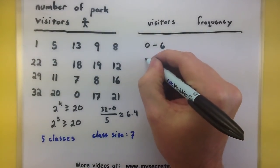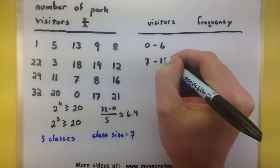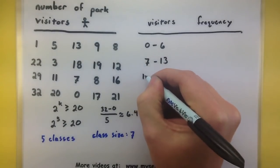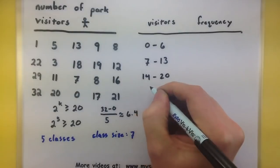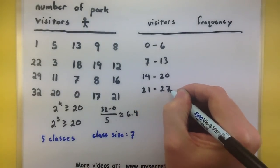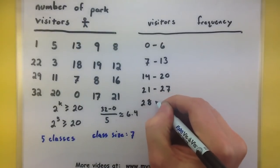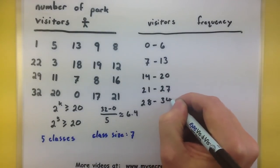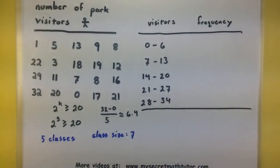Next one contains 7 through 13, 14 through 20, 21 through 27, and the last one 28 through 34. So sure enough, 1, 2, 3, 4, 5 different classes.